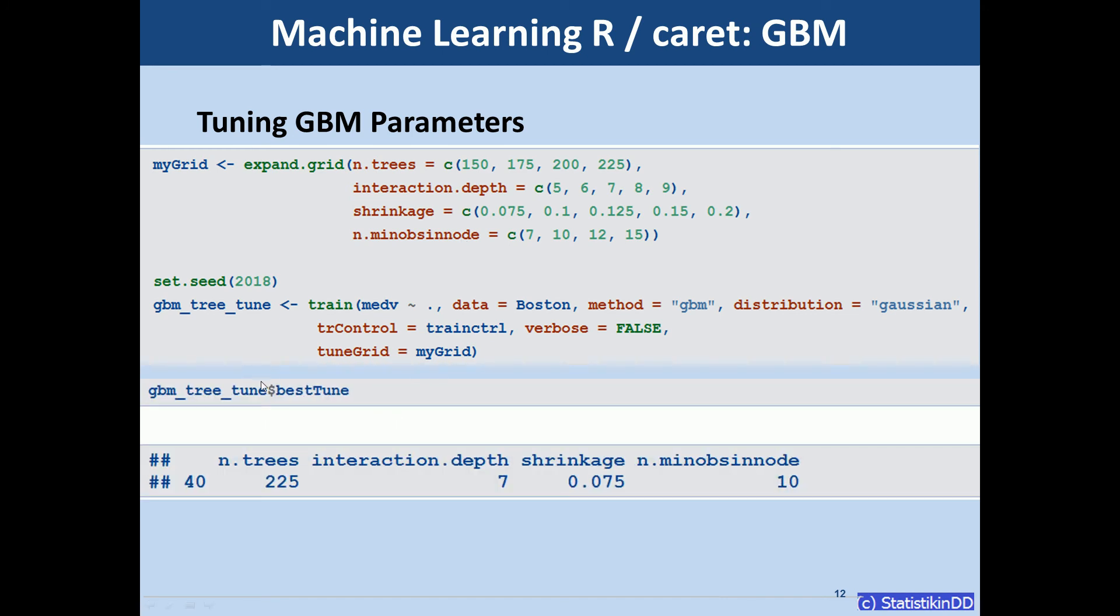And now we can look at the result. First the result is just which parameters turn out best. So the number of trees was increased compared to Caret's first try with the defaults. We have now 225 trees instead of 150.